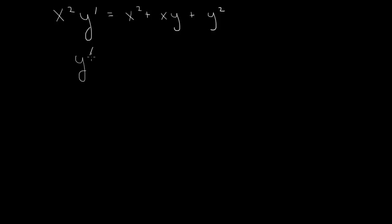If we divide through by x squared, then we have y prime equals 1 plus, divide through by x squared, y over x. Plus, divide through by x squared, y over x squared.